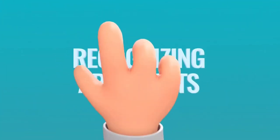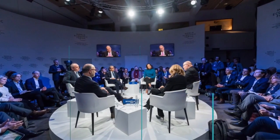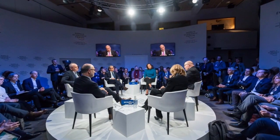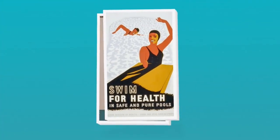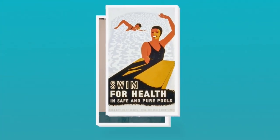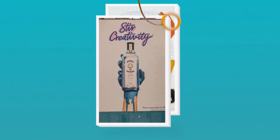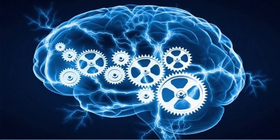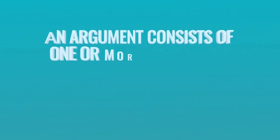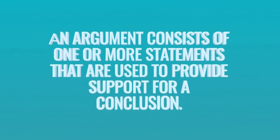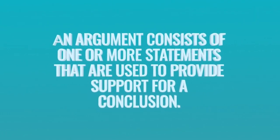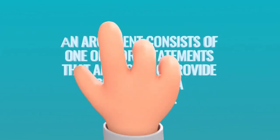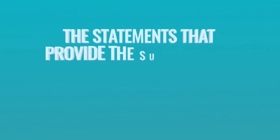Recognizing arguments. Media uses verbal and visual arguments in order to persuade us. Media literacy through critical thinking starts from recognizing what an argument is and what it is not, as well as evaluating its strength. As explained, an argument consists of one or more statements that are used to provide support for a conclusion.